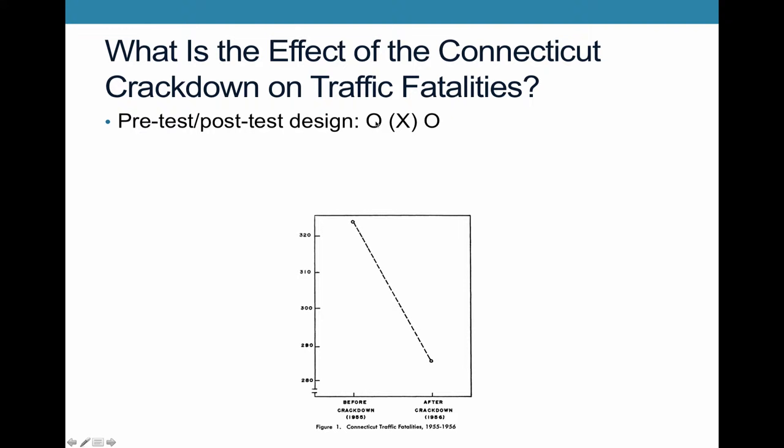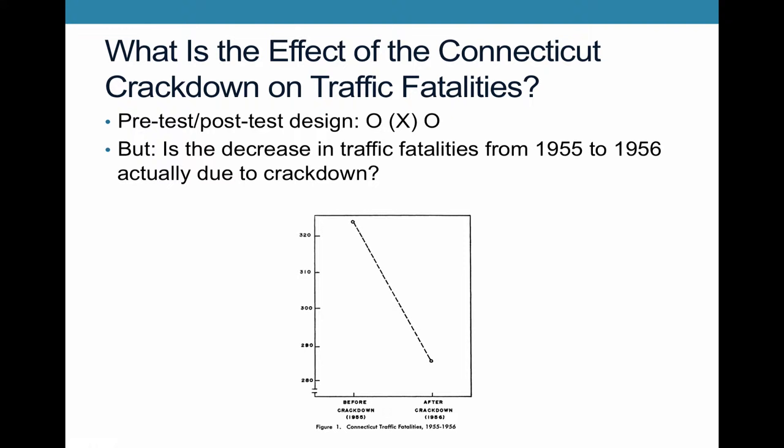So this design is a pre-test, post-test, right? Here's the observation on the dependent variable. And then there's the imposition of the treatment right around here. And then they look at the post-test, which is the dependent variable measure once again. And so the question is, is this decrease that we see in traffic fatalities actually due to the crackdown, or is it due to something else that we might be observing or not observing?